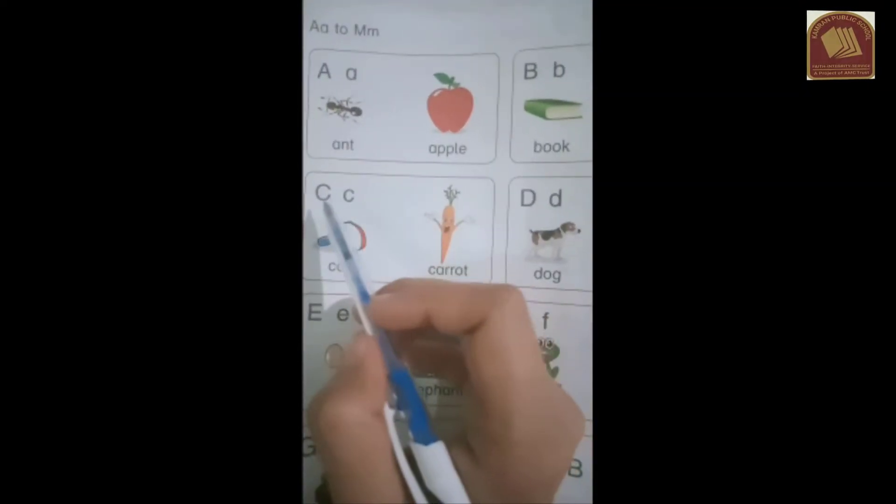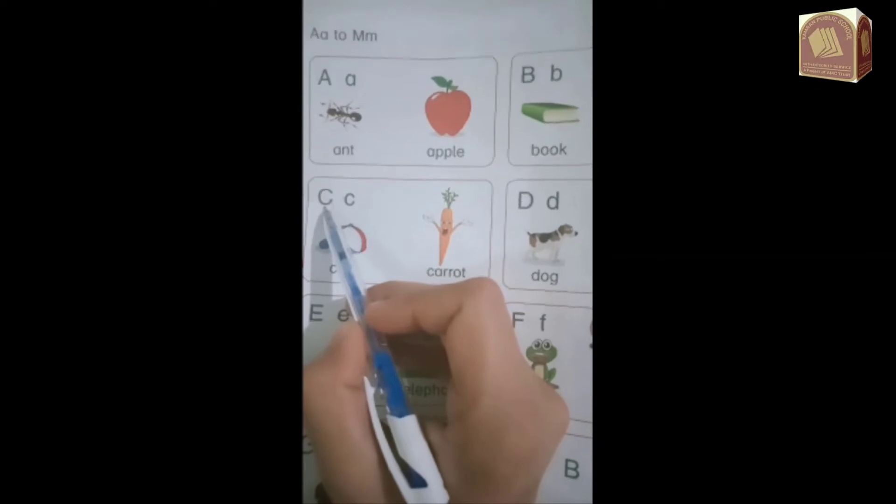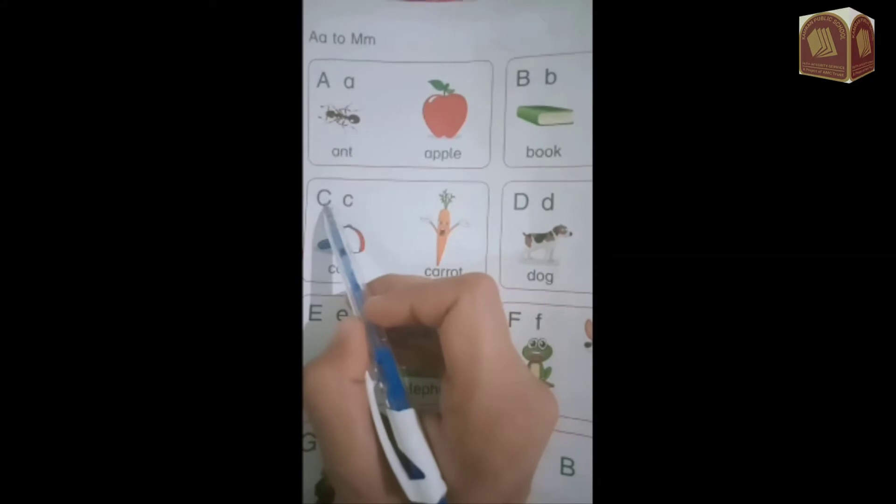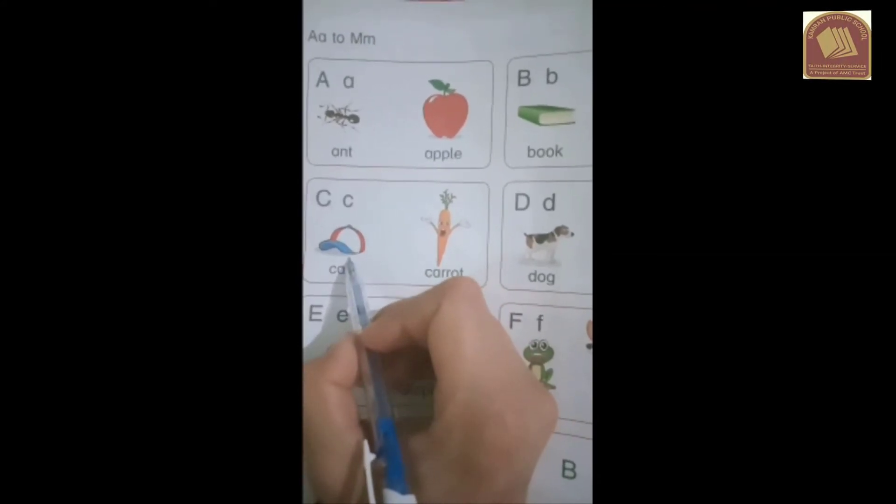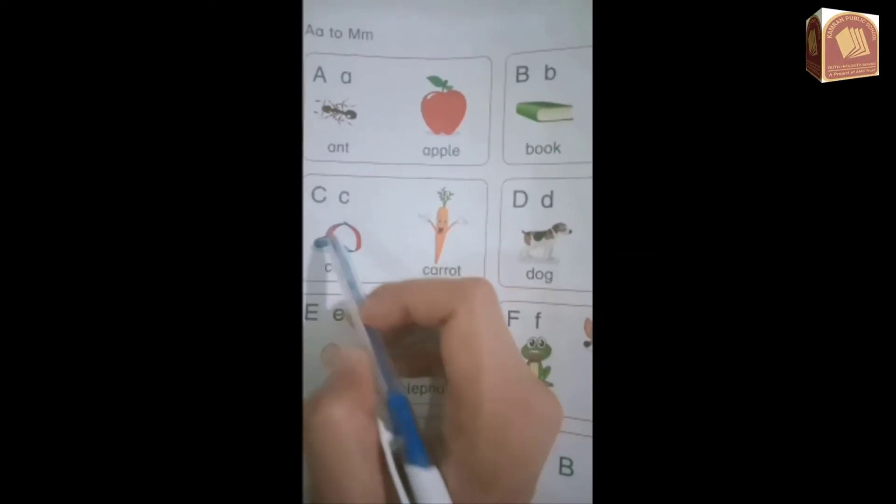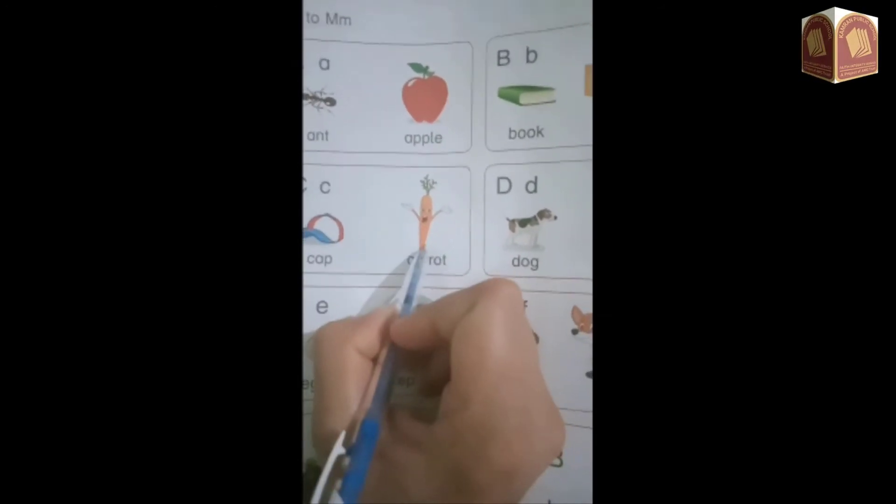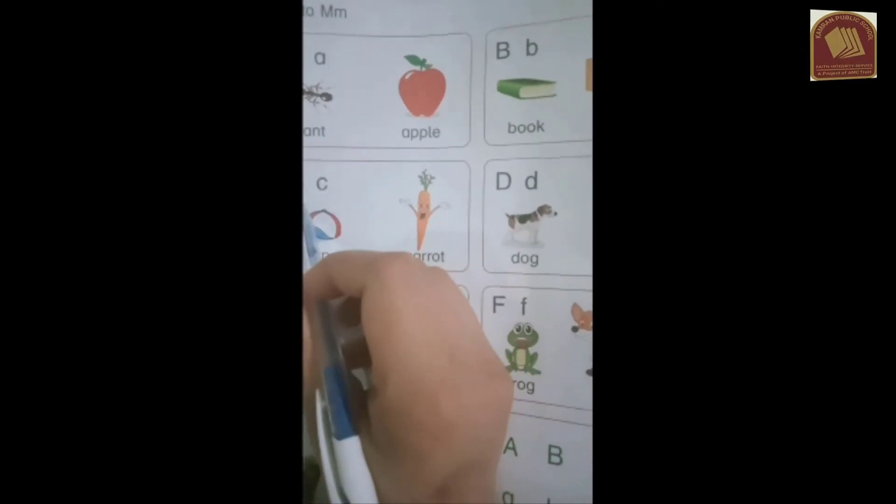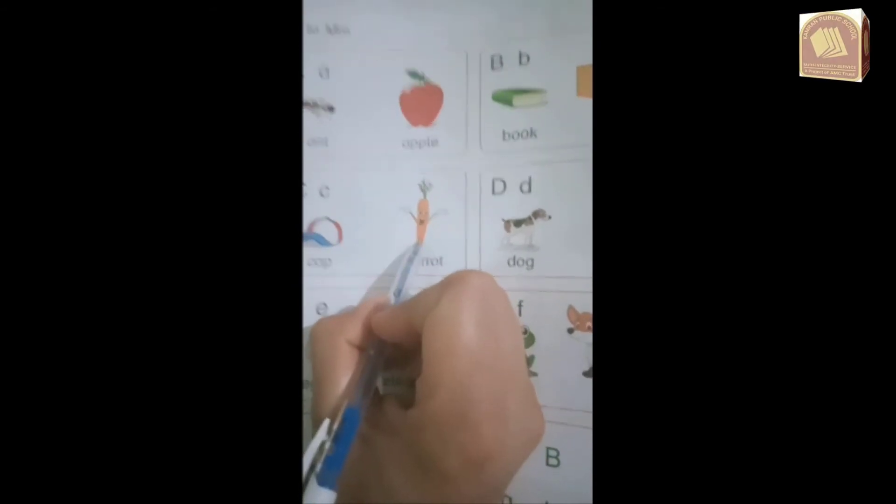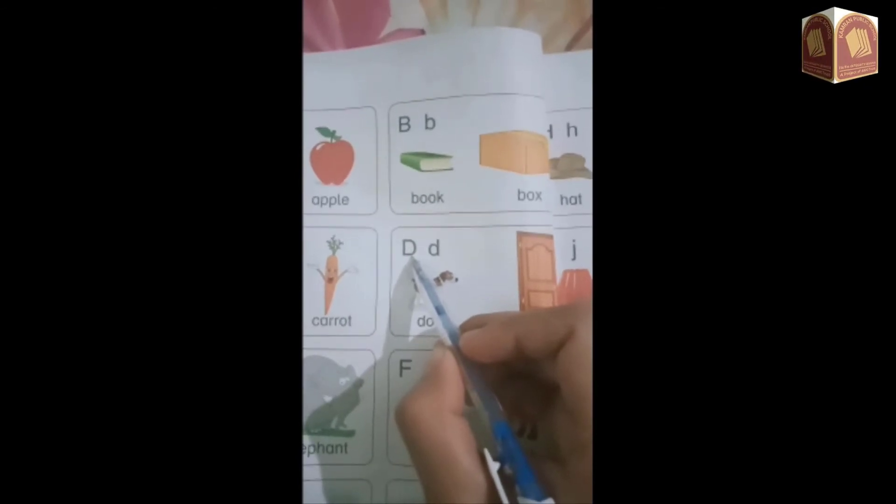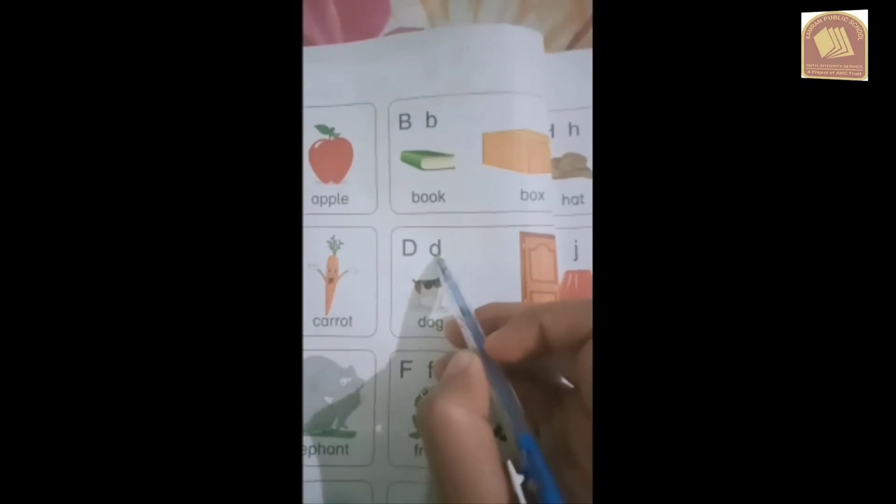This is capital letter C, this is small letter C. C is for cap, C is for carrot. Good. This is capital letter D and this is small letter D.